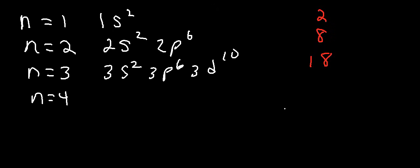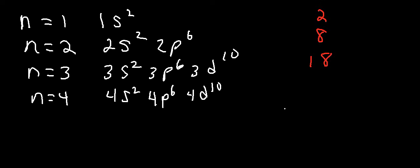In the fourth energy level, you have four sublevels: 4S², 4P⁶, 4D¹⁰, and 4F¹⁴. So this gives you a total of 32 electrons.